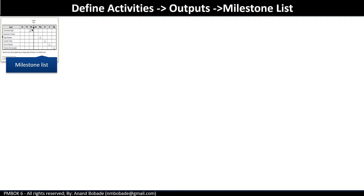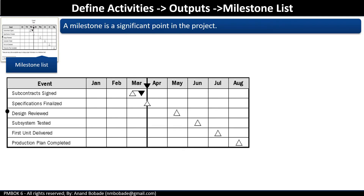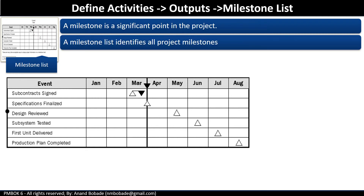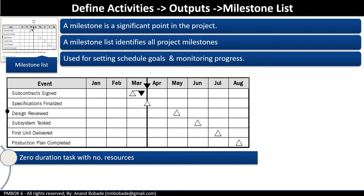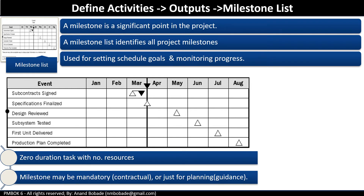Milestone list: a milestone is a significant point or event in a project. A milestone list identifies all project milestones and is used for setting schedule goals and monitoring project progress. Remember, a milestone is considered to have zero duration because it represents a point or event in the project and is not an activity to be executed. Milestones may be mandatory — for example, a contractual milestone — or they can be planning milestones used for guidance purposes.